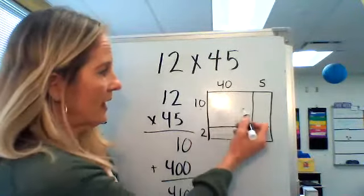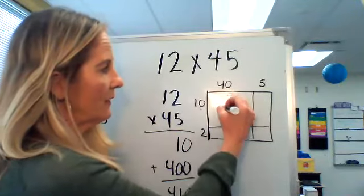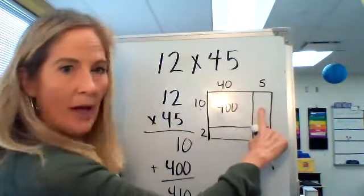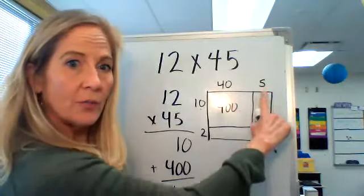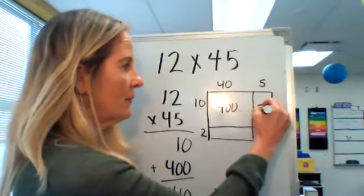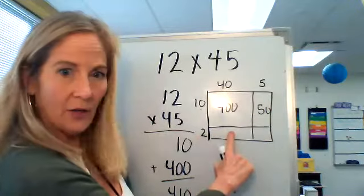Ten groups of 40—there's ten rows with 40 in a row, that's 400. How many rows are here? Well, there's still ten rows, but there's five in each row, so that would be 50. How about here?